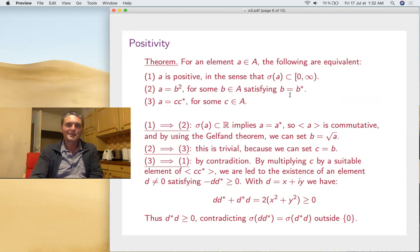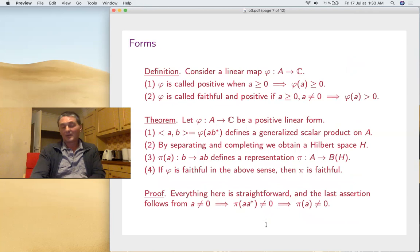Here we have the following equivalence for elements. Spectrum is positive; it's a square of a self-adjoint; or it's of the type c*c for some c ∈ A. These are all equivalent. You use Gelfand here from one to two. Once you're self-adjoint and the algebra's commutative, it's about functions, you can extract square roots. Two goes to three is trivial. Three goes to one is a bit tricky. You do some tricks and finally contradict the fact that the spectrum of ab should equal the spectrum of ba outside of zero.